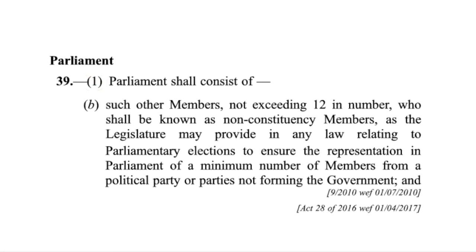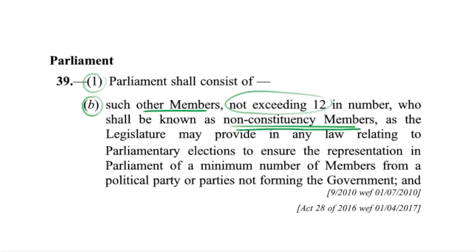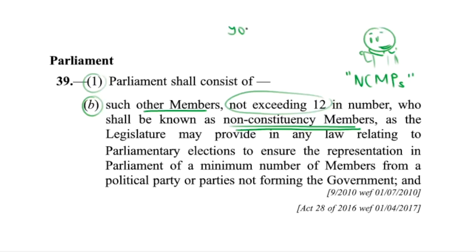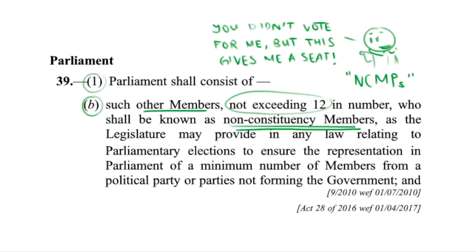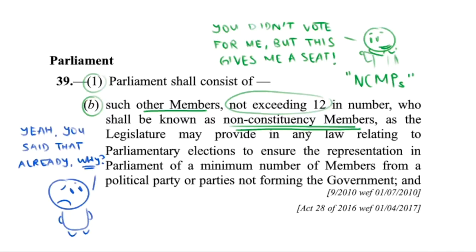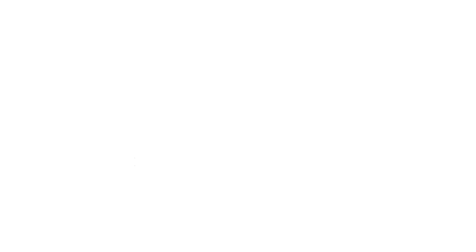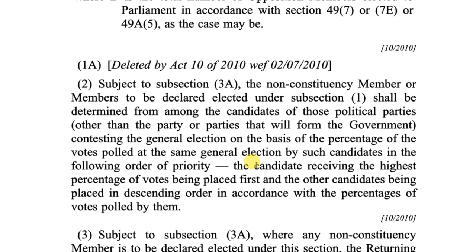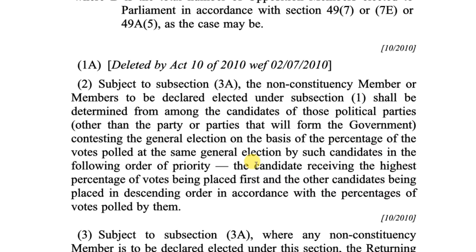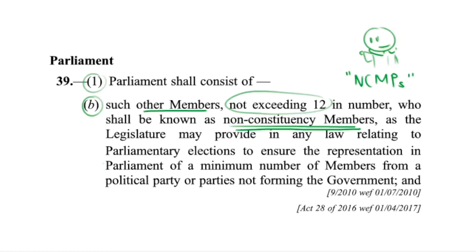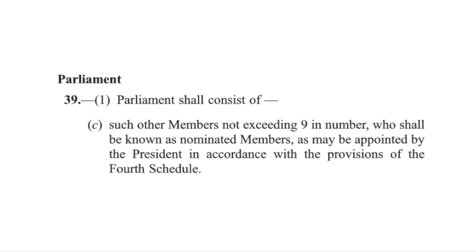Let's start with subsection 1B of the article. It states that along with the elected members, parliament shall also consist of a maximum of 12 non-constituency members of parliament — the NCMPs. The name gives it away: the NCMPs don't have a constituency; they simply weren't elected by the people. Subsection 1B also says that the existence of these NCMPs is provided by law. That law refers to Section 52 of the Parliamentary Elections Act, which essentially states that these NCMPs are candidates from opposition parties with the highest percentage of votes in elections without getting elected — the so-called best losers of the elections. So the NCMPs kind of got elected, but not really, and this is, under Article 39 subsection 1B, constitutional-level significant.